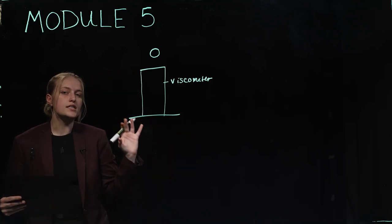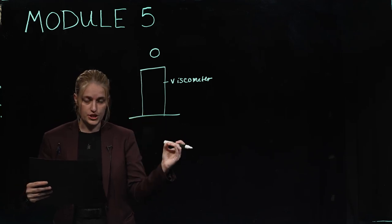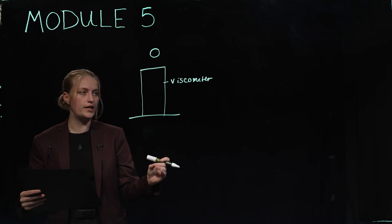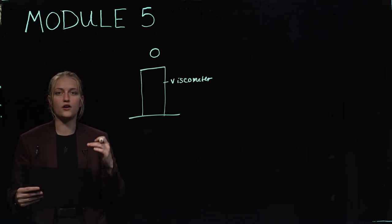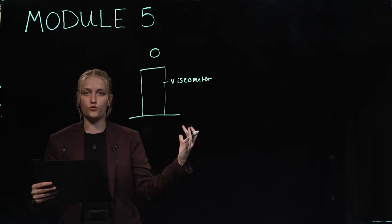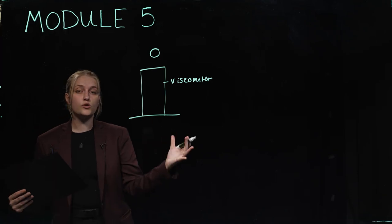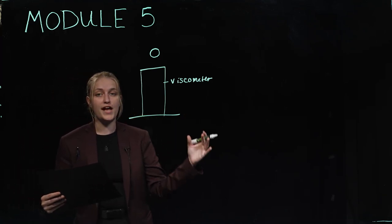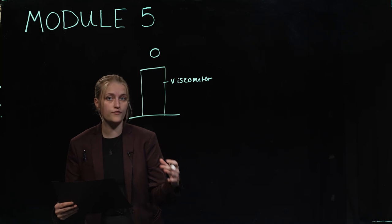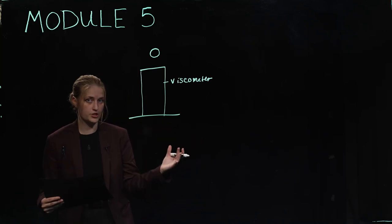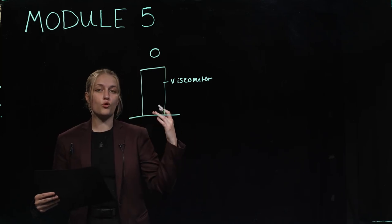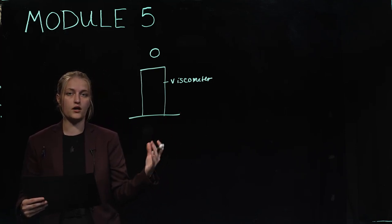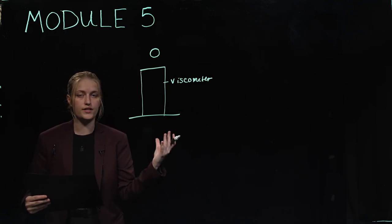Viscosity is incredibly important in volcanology because lava counts as a fluid. The viscosity of that fluid changes depending on the conditions under which it forms, things like heat. Also important in volcanology is that viscosity changes the shape and explosivity of the volcano and how the eruption unfolds. So it's very important in hazard prediction to know what the viscosity of the lava in a given volcano is going to be.